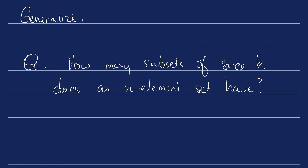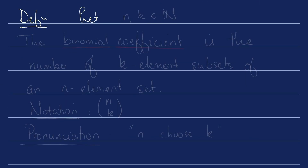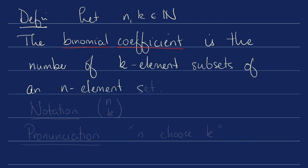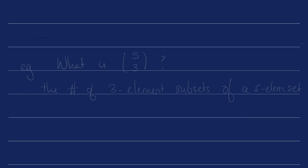In order to answer this question, we introduce the notion of the binomial coefficient. Definition: let n and k be natural numbers. The binomial coefficient is the number of k element subsets of an n element set. The notation is the two numbers stacked on top of each other between parentheses, n above and k below. The way you pronounce it is 'n choose k' — out of a set of size n, how many ways can you choose k things?